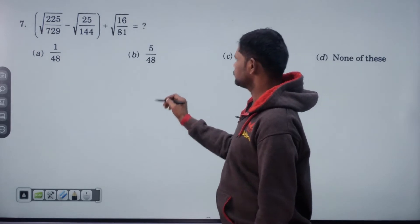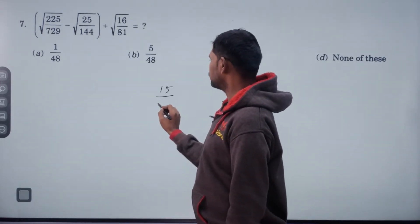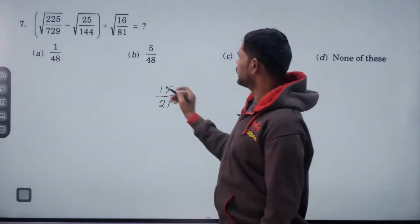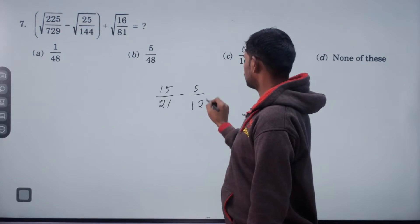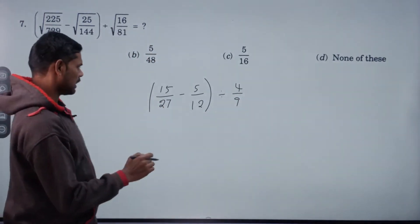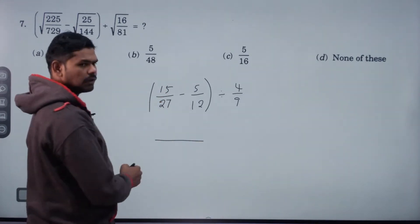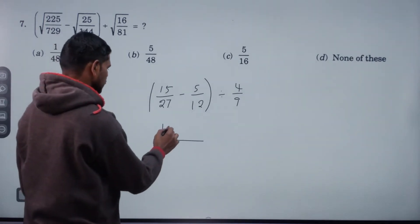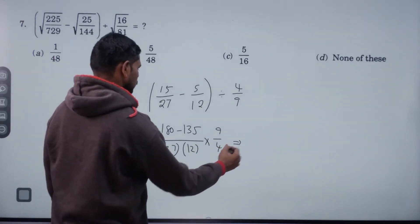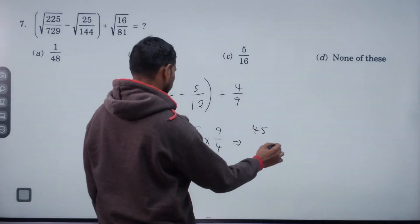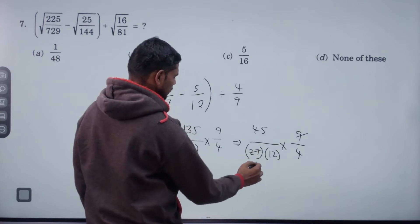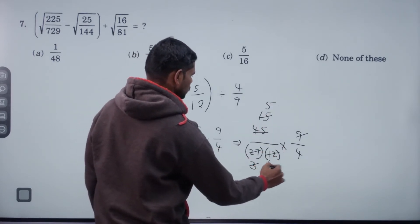Root of 225 by root 225 value 15, by root of 729 value 27 squared. Minus root 25, 5 by 12, divided by root 16. 4 by 9 divided by 5. Cross multiply: 12 into 15 is 180, minus 25 into 27 is 135. 180 minus 135 by 27, into 12 into 9 by 4. That gives 45 by 27 into 12 into 9 by 4. After cancellation: 5 by 4 into 4.